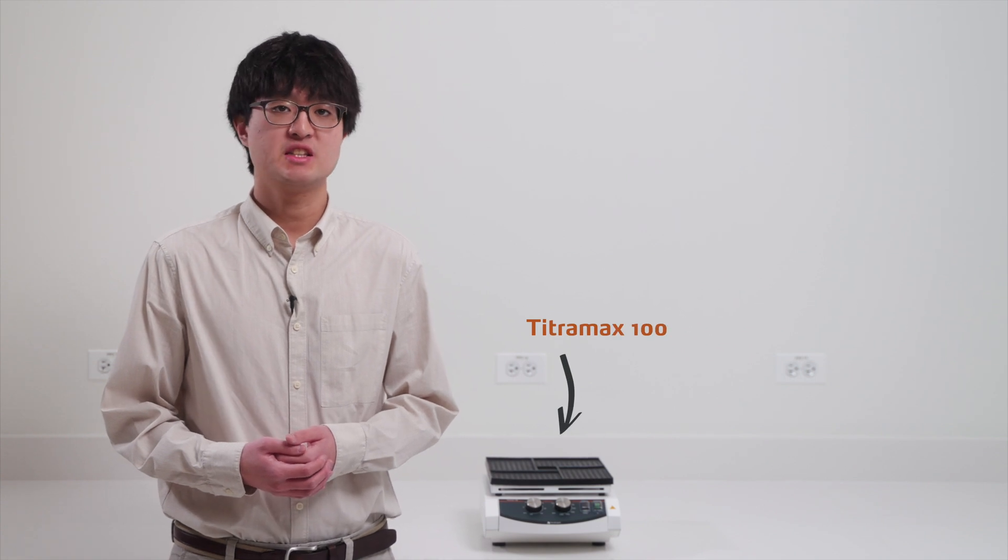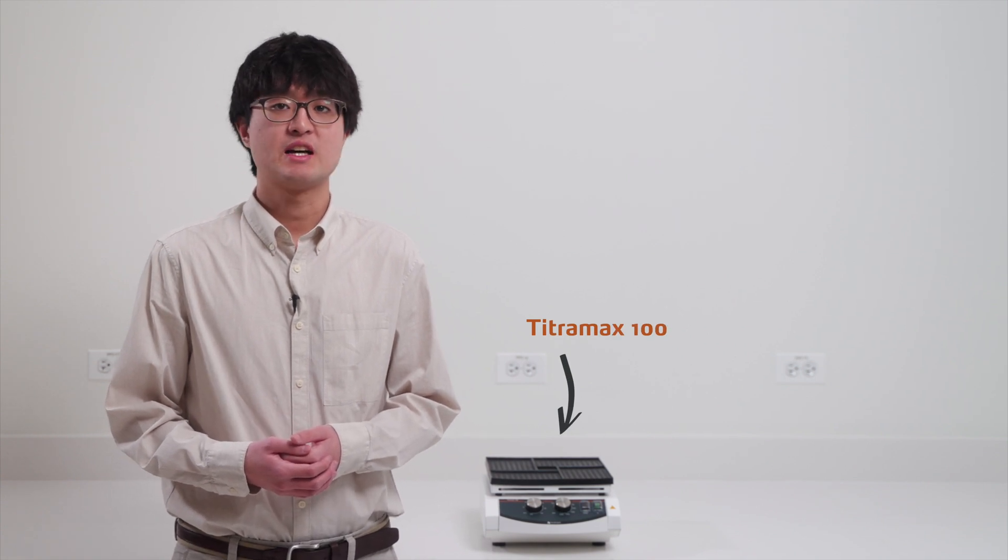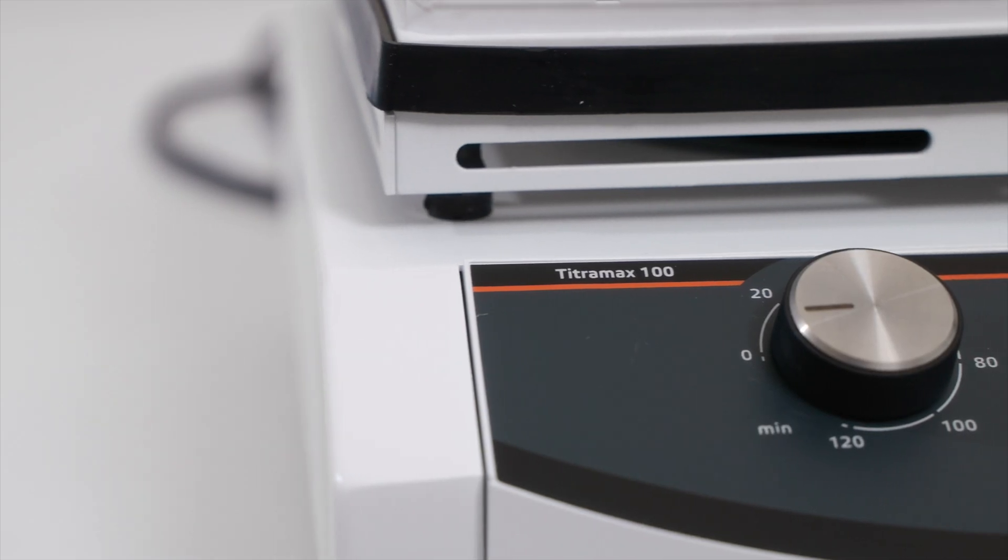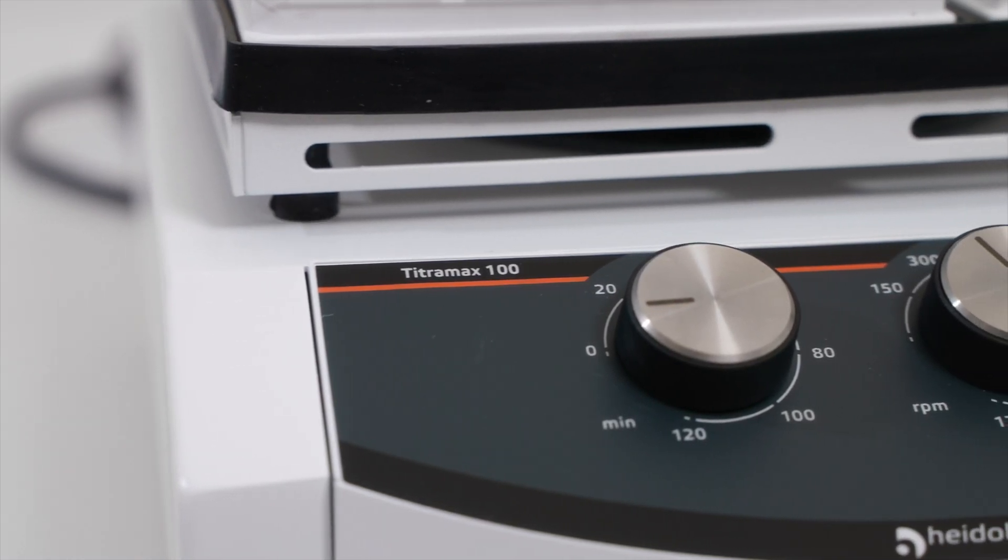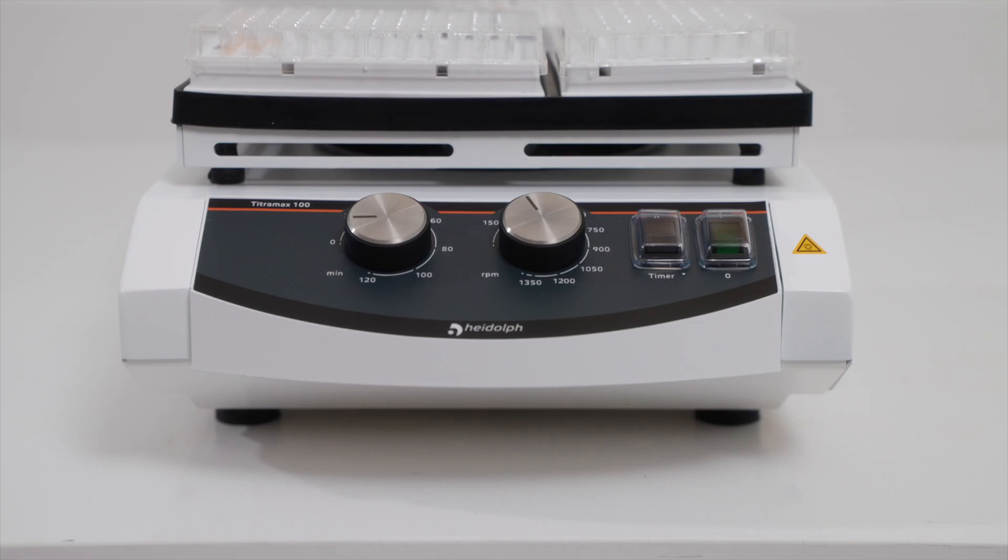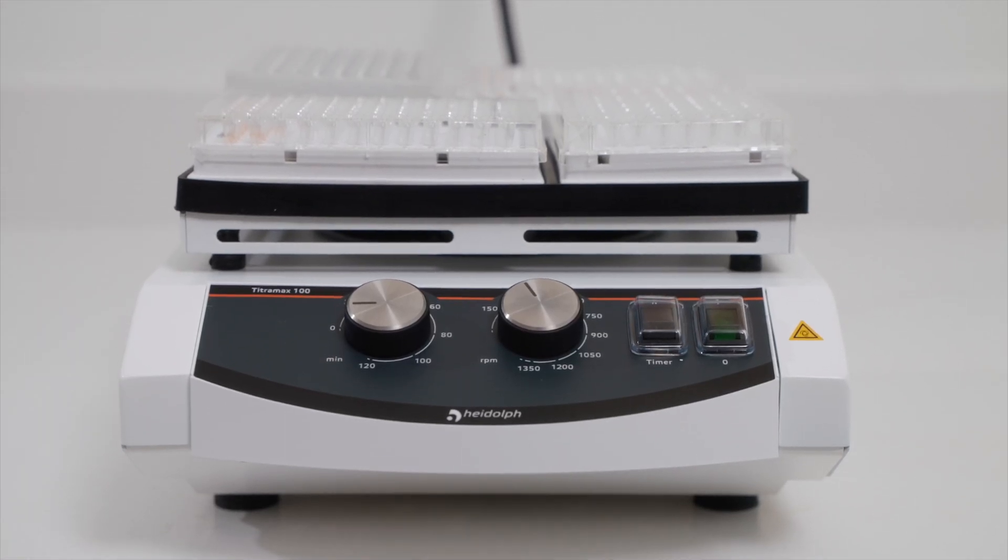The Titramax 100 is our standard model. This model has a compact footprint and can hold up to four micro-titer plates. In terms of specifications, the Titramax 100 has a guaranteed vibration orbit of 1.5mm and a speed range of 150-1350rpm.